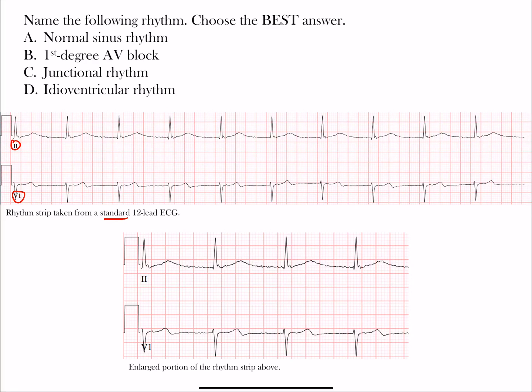We're only given two leads, shown in a large version to help you see the smaller squares and assist with finding the rate. Let's go through each answer choice. For choice A — normal sinus rhythm — in lead II we expect to see upright P waves. The normal P wave axis in sinus rhythm is about positive 60 degrees. In the horizontal plane, looking at the precordial leads in V1, we can sometimes see biphasic P waves.